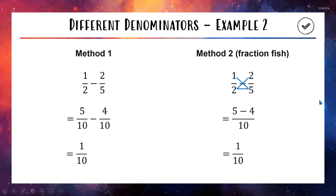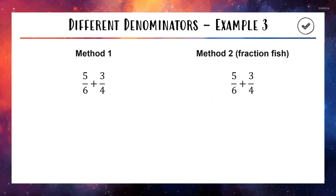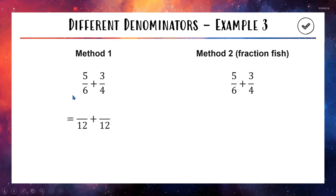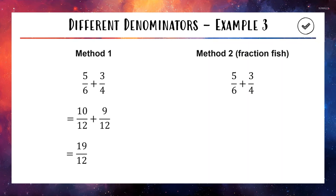One more example: 5 out of 6 plus 3 out of 4. Using Method 1, we find the least common multiple of 6 and 4. While 6 times 4 is 24, a better answer is 12 — the smallest number both go into — saving you some work. So 12 equals 6 times 2 and 12 equals 4 times 3. Multiply the first fraction's top and bottom by 2 to get 10 over 12. Multiply the second's top and bottom by 3 to get 9 over 12. Now with matching bases: 10 plus 9 is 19, giving 19 out of 12. An improper fraction is fine.